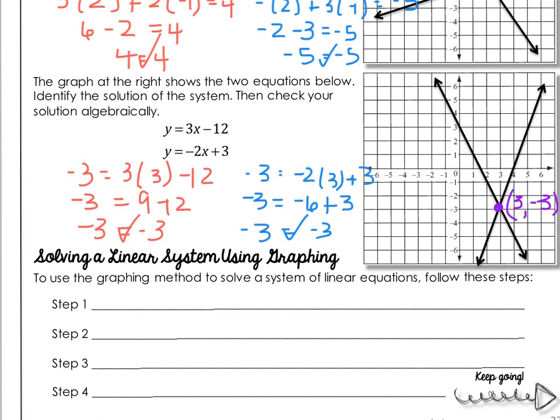For this example, the solution is at 3, negative 3. I plug those into the equations. In my first equation, it's balanced — negative 3 equals negative 3. In the second, negative 3 equals negative 3. At this point, you're probably realizing that solving by graphing has a distinct limitation: it works best when the solution is whole numbers. If it's a fraction or decimal, it's not going to work very well.